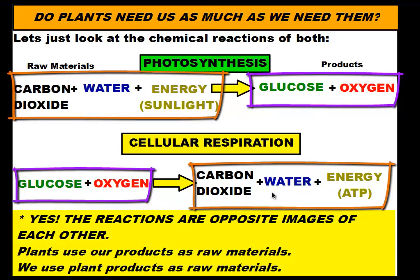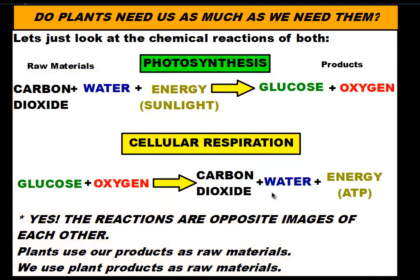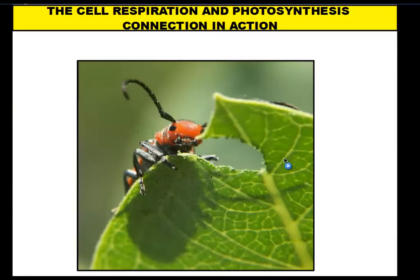One way to remember this is that photosynthesis and cell respiration are opposite reactions to one another. So let's take a look at how this works in real life between a plant and an animal. We have an ant here hanging out on a leaf on a sunny day, getting a quick bite to eat — and look at that hole he's put in the leaf, he's been going to work for a while. Let's start talking about photosynthesis first.